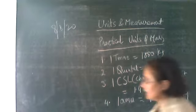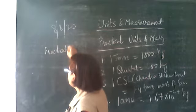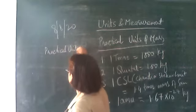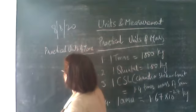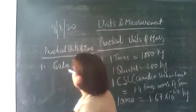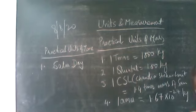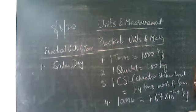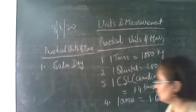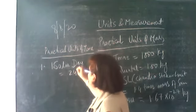Now let's discuss some practical units of time. The first one is the solar day, defined as the time taken by the earth to complete one rotation about its axis. One solar day is equal to 24 hours.